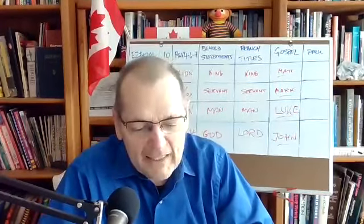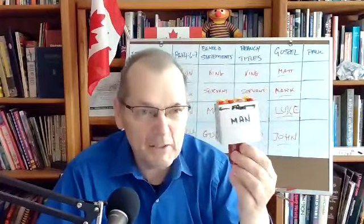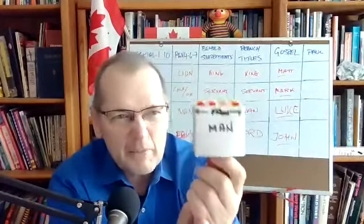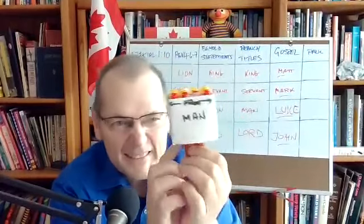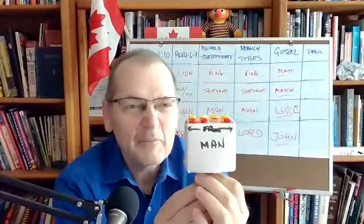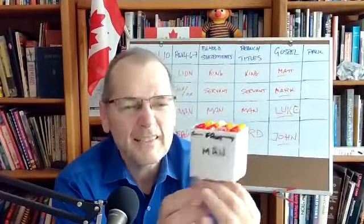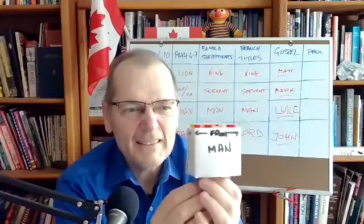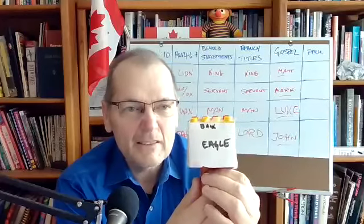I was thinking about this and I came up with a visual using Lego. If you look at the front of the cherubim, you see a man. On the right side, you see the lion. On the left side, you see the ox. On the back side, you see the eagle. So around the throne of God, these created beings were there, giving us the fourfold picture.